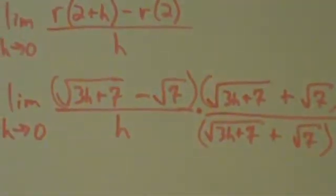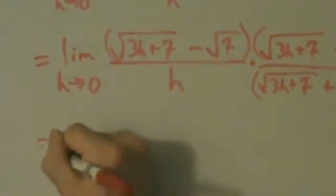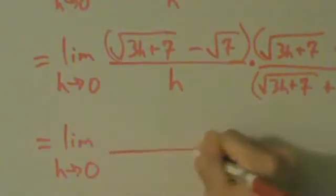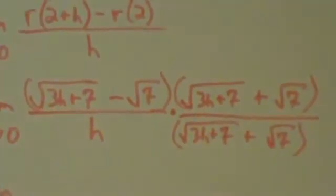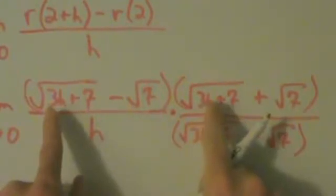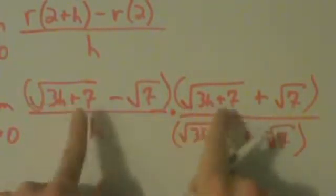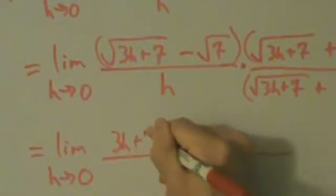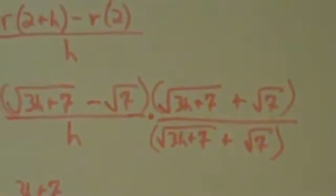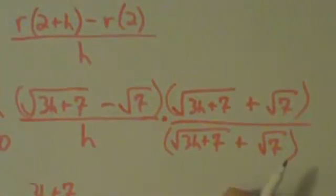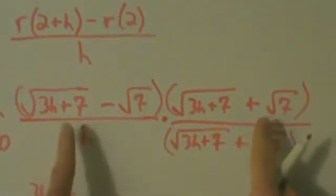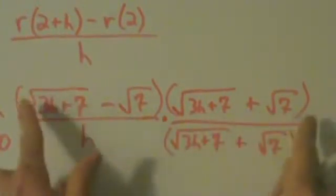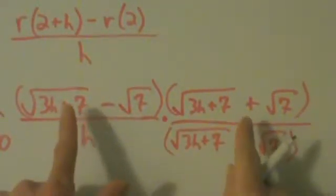Okay, so now when we expand, let's go ahead and come down here. This equals the limit as h goes to 0 of what's going on. Foil on the top. So first gives us 3h plus 7 without the square root. We have 3h plus 7. Outer and inner are going to cancel again because it's plus something minus that same thing. Outer is plus something, inner is minus the same thing. So outer and inner are going to cancel, which is great.